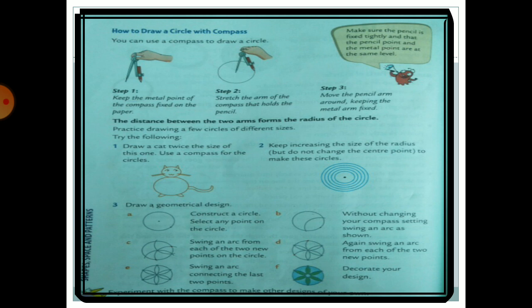To keep increasing the size of the radius: take a compass and first make a small circle. Keep the center point the same but increase the radius each time. You will get circles — small, then slightly bigger, then bigger still — all sharing the same center.